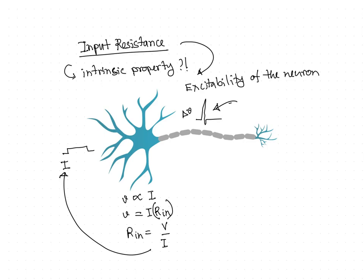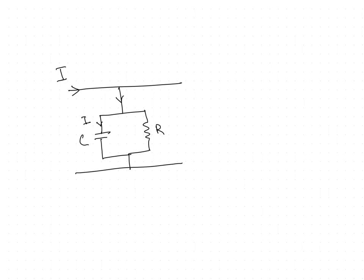Now we very often compare a neuron to be actually an RC circuit. So here we have a capacitor component and we have a resistor component. Now whenever we inject some amount of current in this circuit, first the current is used to charge the capacitor and then it is flowing through the resistor.